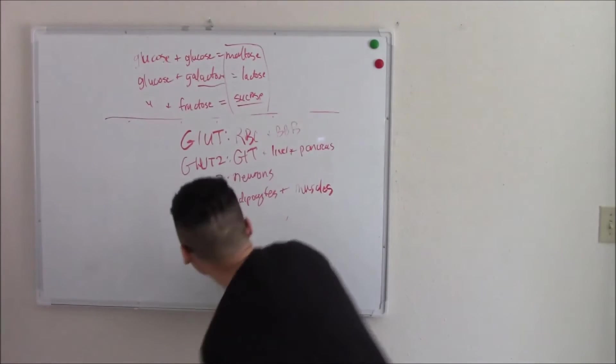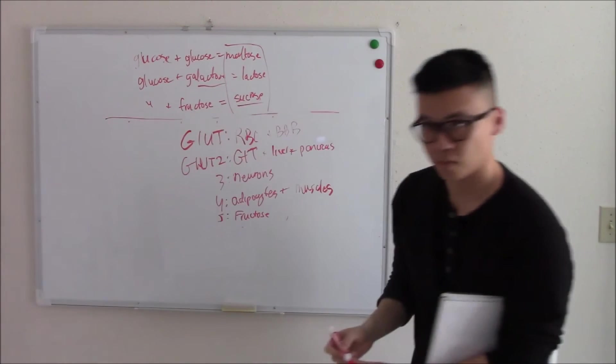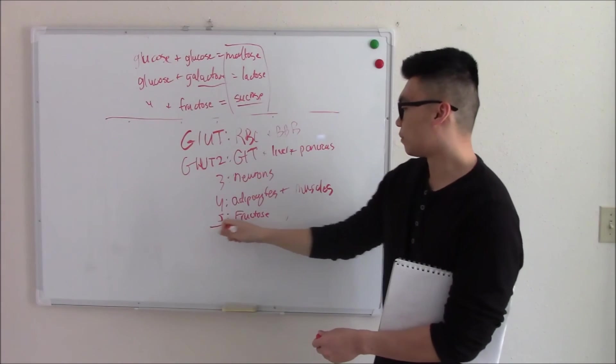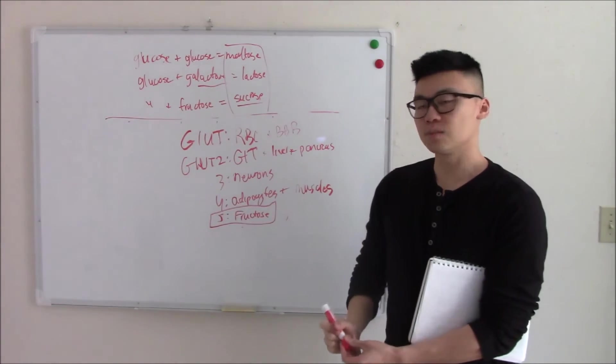And then finally, GLUT 5. The main importance is that it carries fructose. Widely distributed, but it's one of the few that carries fructose. That's the main part.